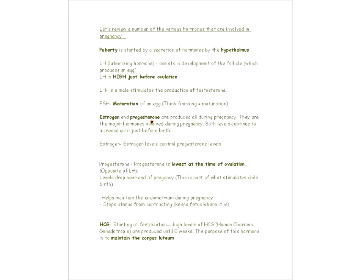Progesterone is lowest at the time of ovulation — think of it as the opposite of LH, which is high just before ovulation. Near the end of pregnancy, progesterone decreases, and that's part of what stimulates childbirth. Progesterone also maintains the endometrium during pregnancy and stops the uterus from contracting — it keeps the fetus where it is. We'll see another hormone in just a second that does the opposite of stopping the uterus from contracting.